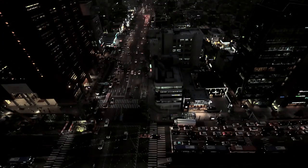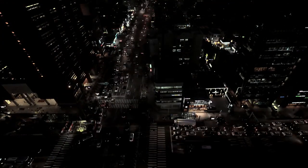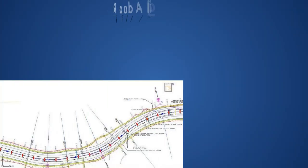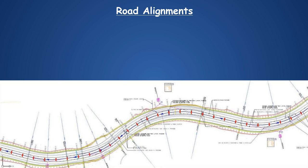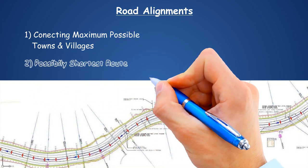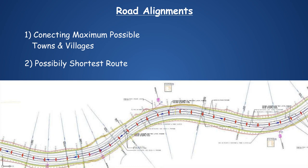Also, the frequency of traffic flow with a forecast of the next 20 years shall be considered to design the number of laning required. While designing any road project, the first design work is the road alignment. Factors to be considered while deciding the road alignment are: one, connecting the maximum possible towns and villages along the route; two, possibly the shortest route; and three, as much as possible economical, considering minimum land acquisition and the minimum number of culverts and bridges required.